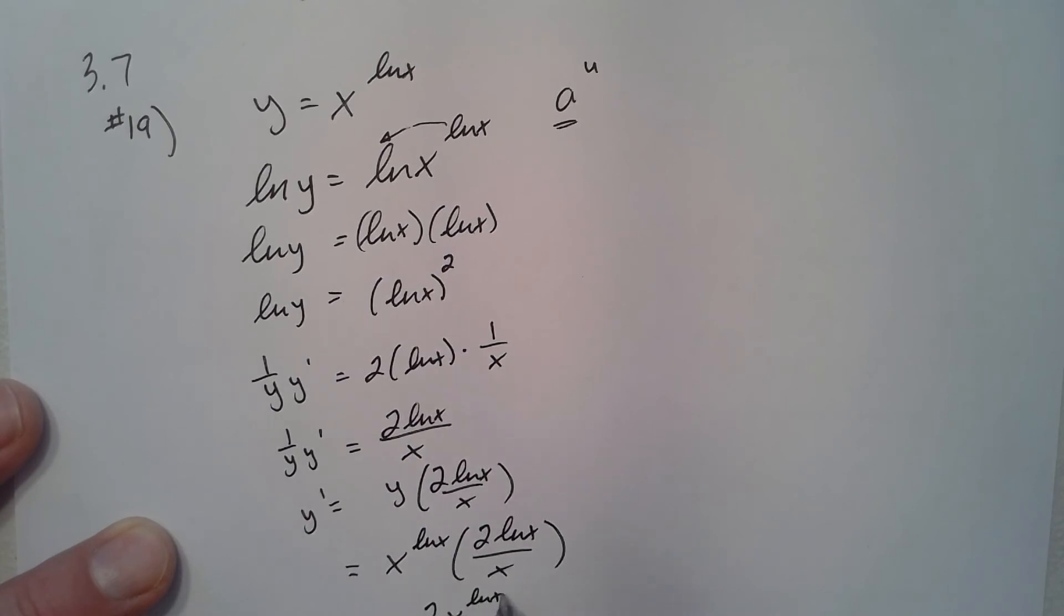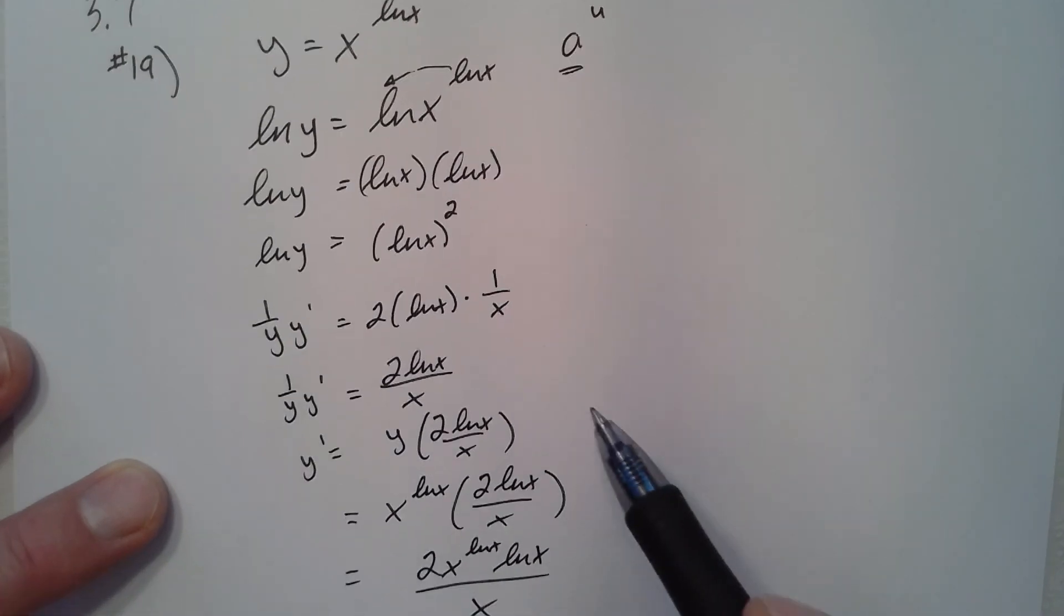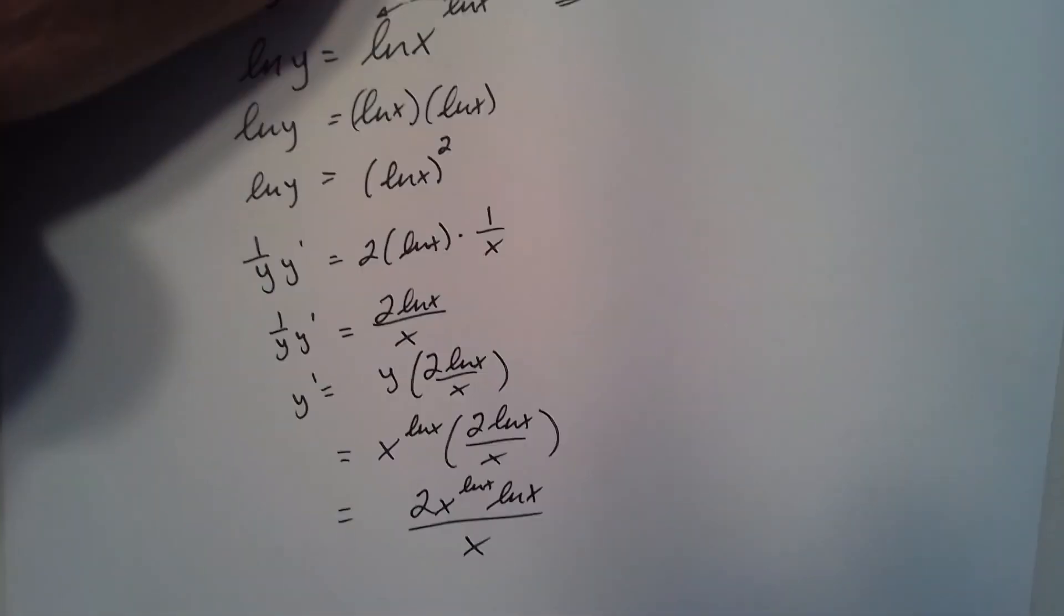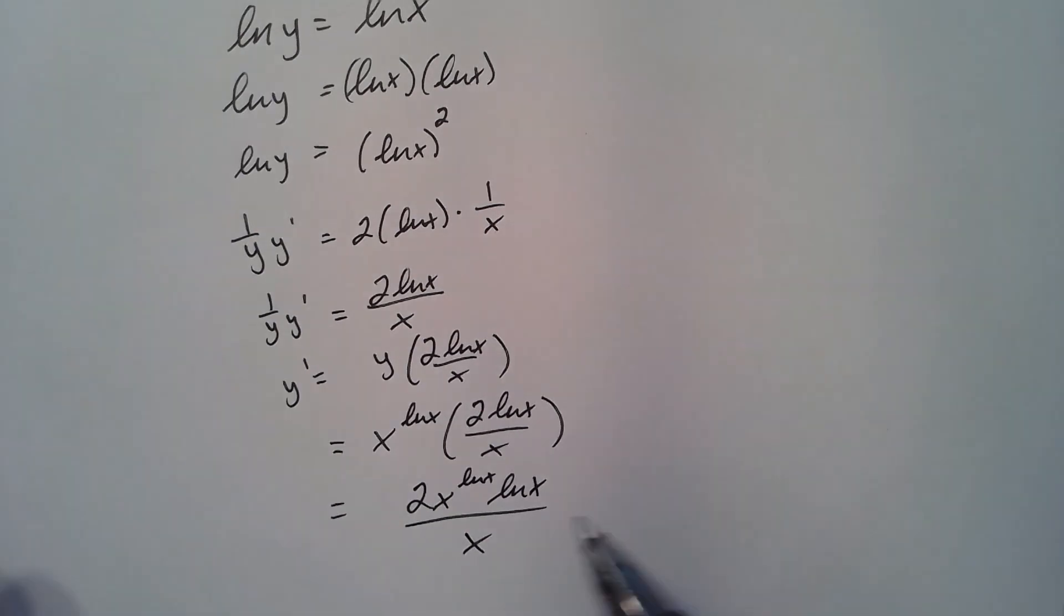And I don't think there's a better way for an answer than what we have. We could factor out natural log x minus 1, but I don't think that's any better than what it has. So that's what I would do for an answer right there.